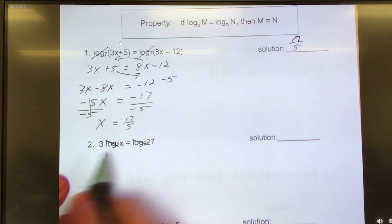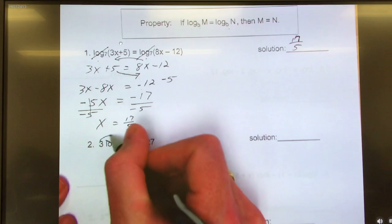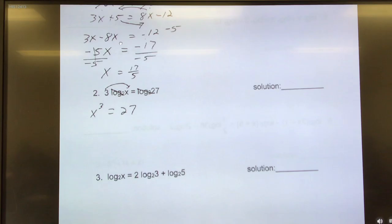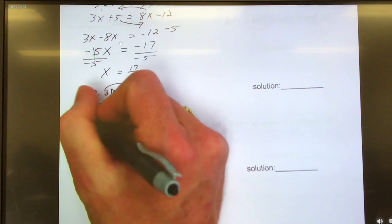They both have a log base 2, so I can scratch that part off. What did the 3 up front mean? How did it get there? It's the exponent of what follows. So it goes here. So it's x to the third equals 27. How do I get rid of x to the third? Let's pretend it was x squared. How would I get rid of x squared? Square rooted.